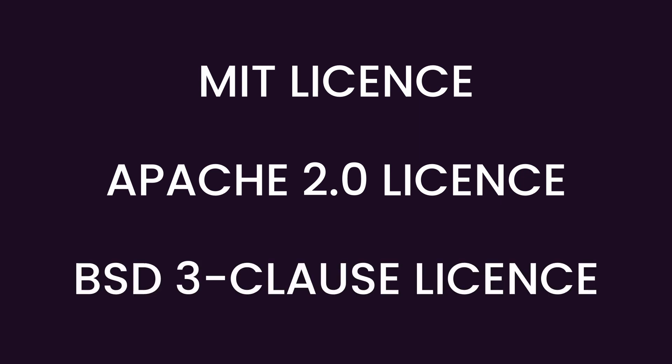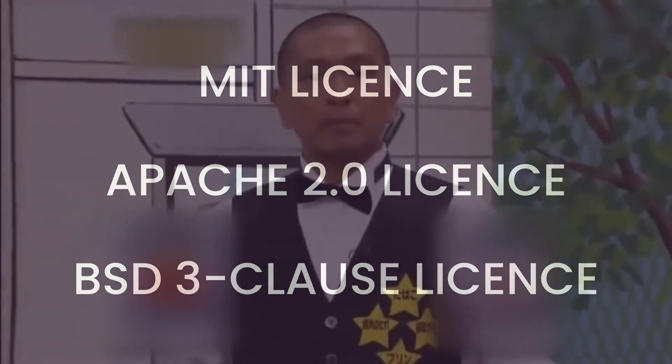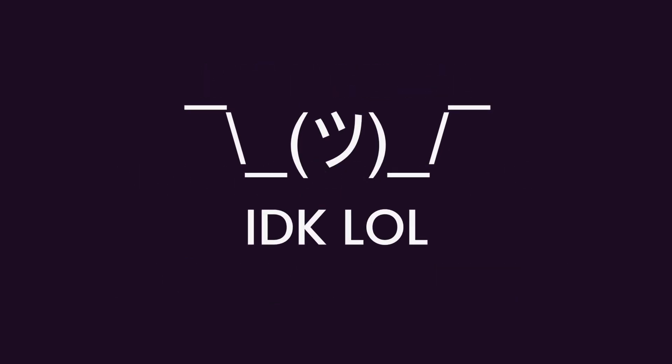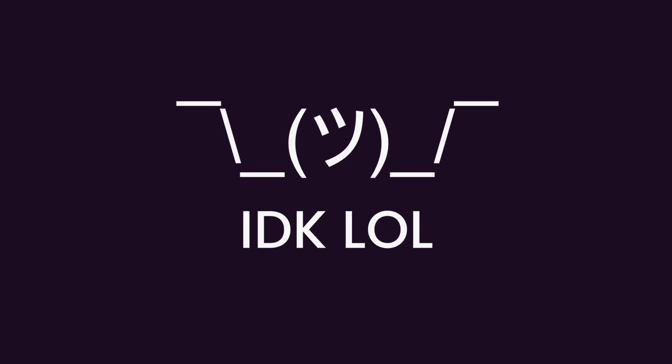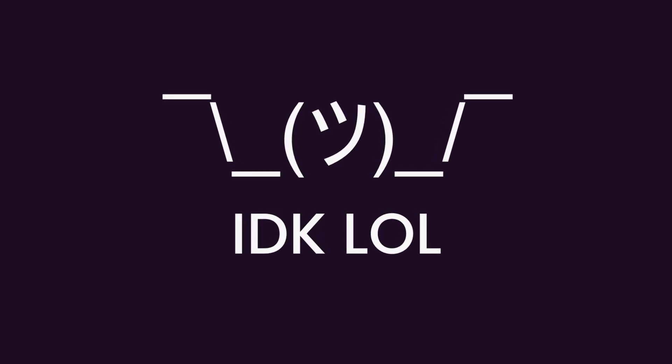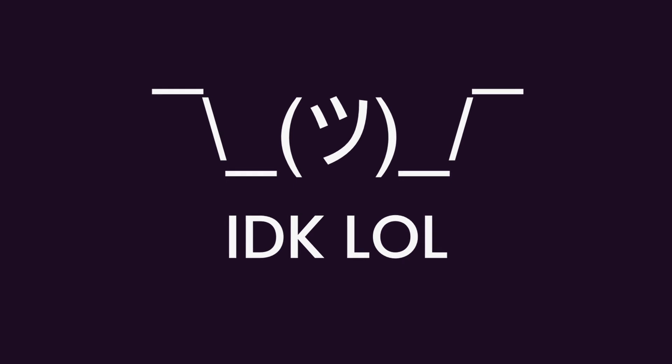The MIT license, Apache 2.0 license, and BSD 3.0 license are all extremely permissive licenses that allow a software package, module, or library to be used in commercial software products. Just be aware that sometimes these programs have their own dependencies which use different licenses, so please do your own due diligence by checking the README, license files, and any other relevant documents in the dependency's source repo.